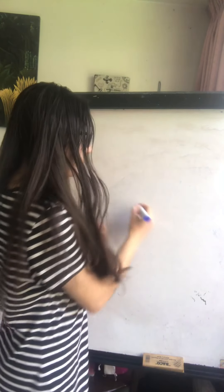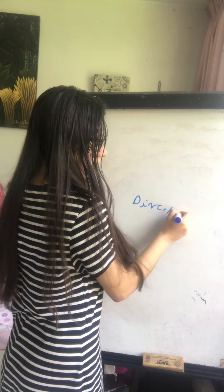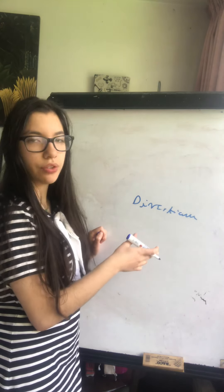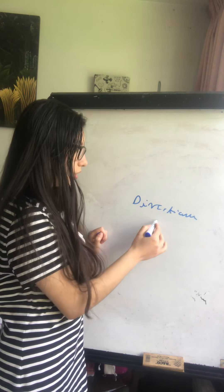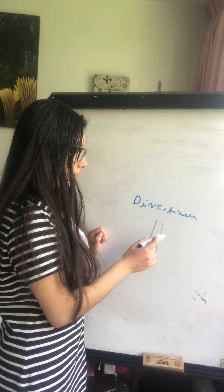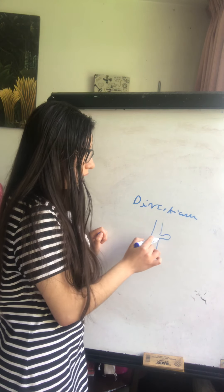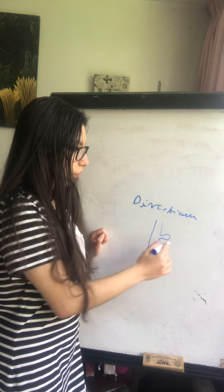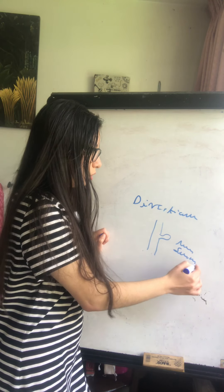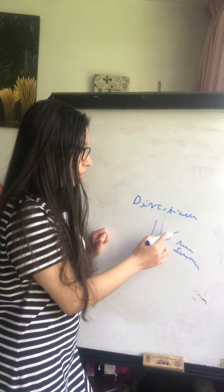Now we're going to see diverticulitis. Diverticulitis is the infection or inflammation of a diverticula. Here we have the colon. We have an outpouching here — that is the protrusion of the mucosa and the submucosa through the muscularis propria. This is a diverticula.